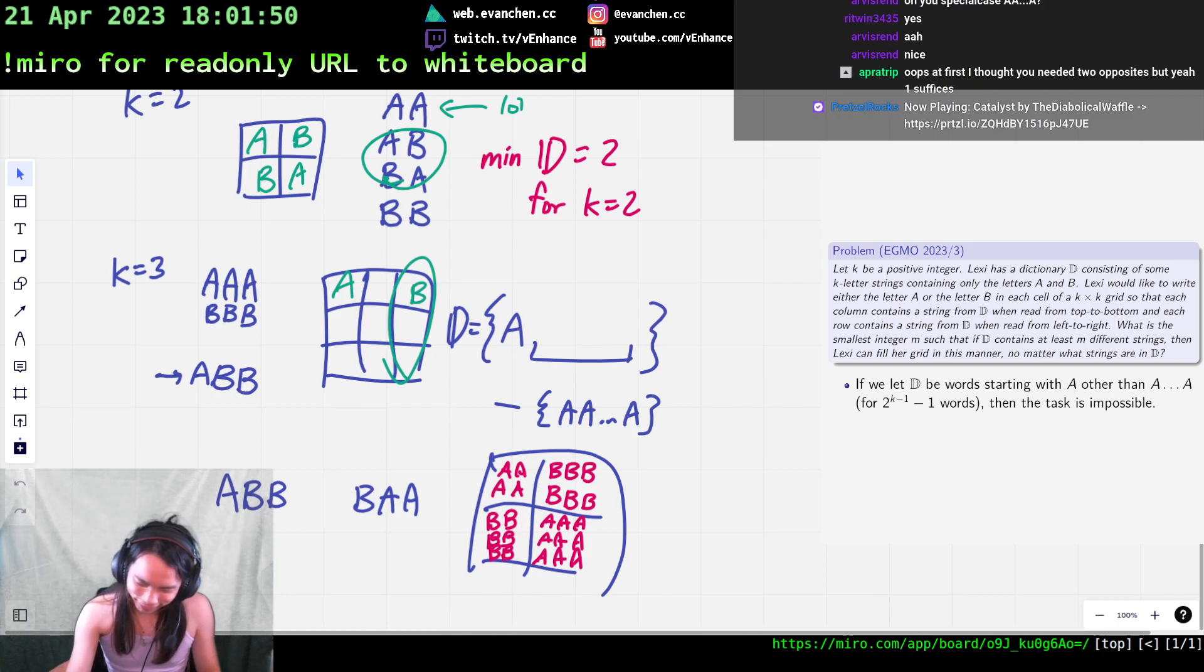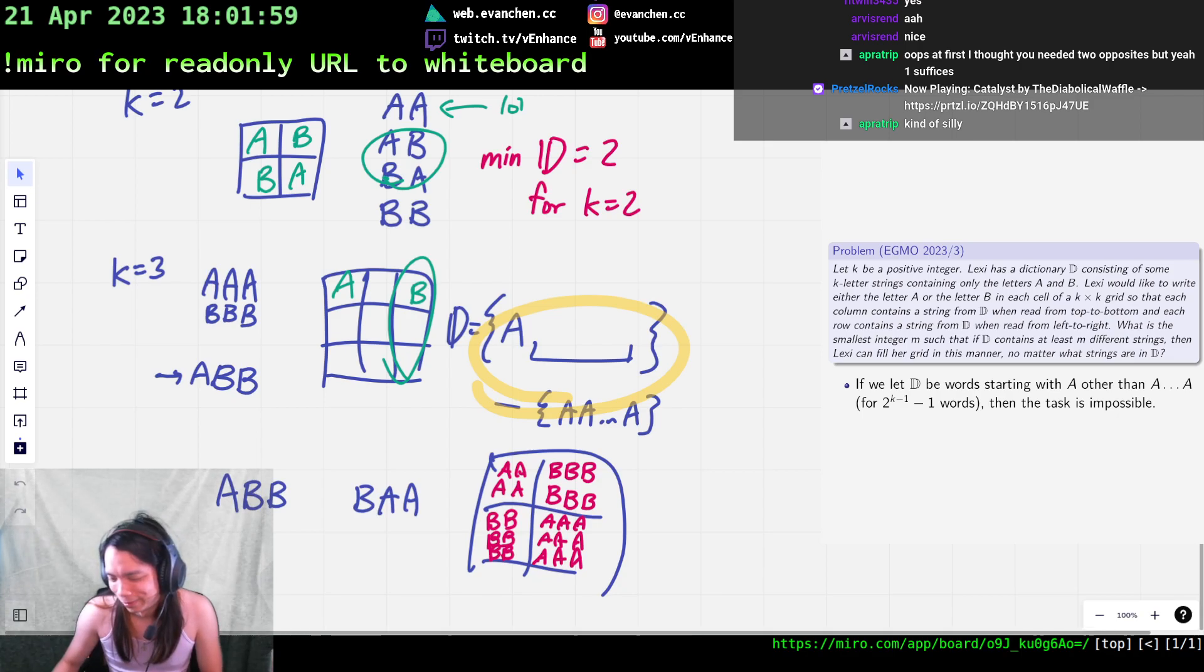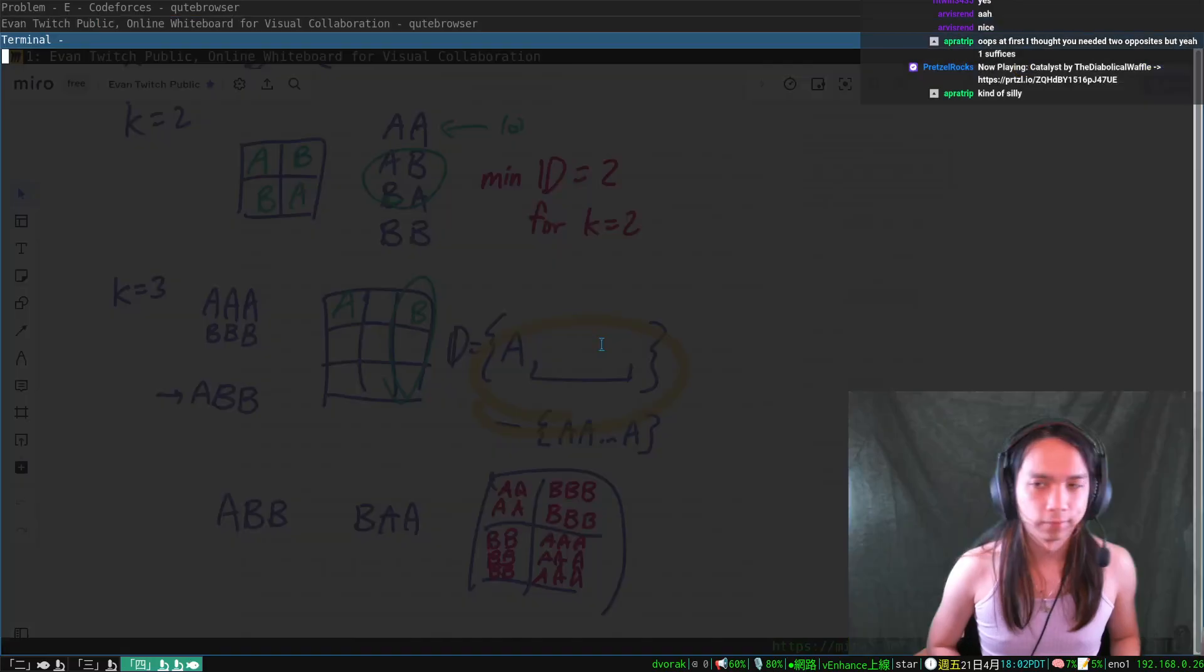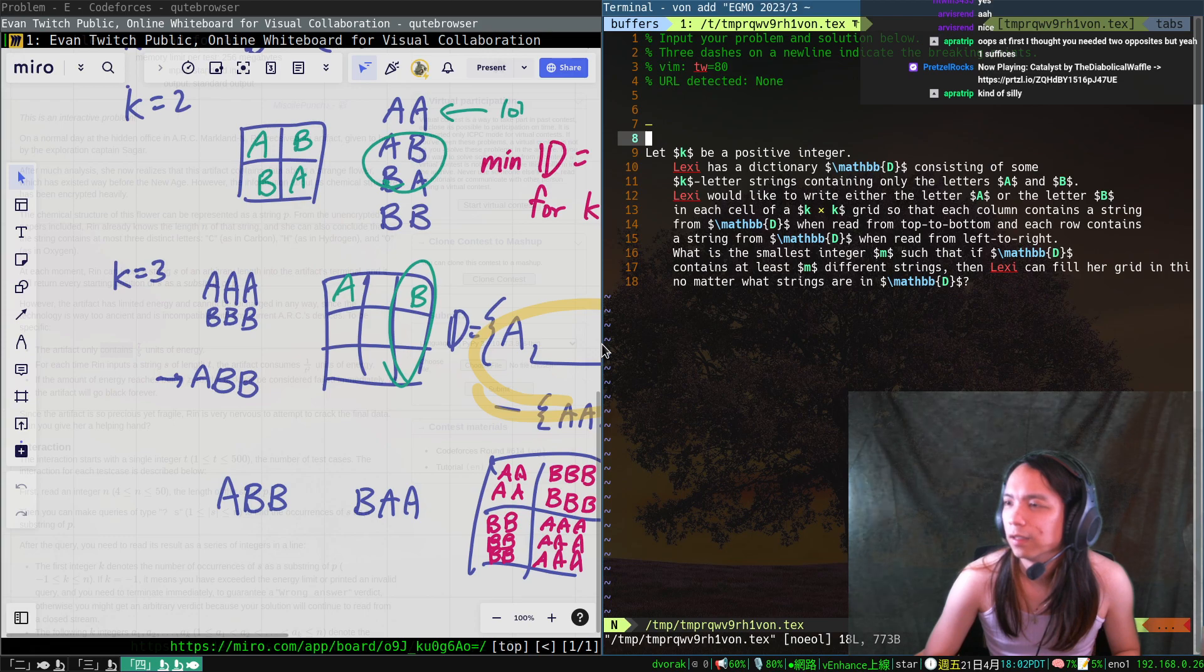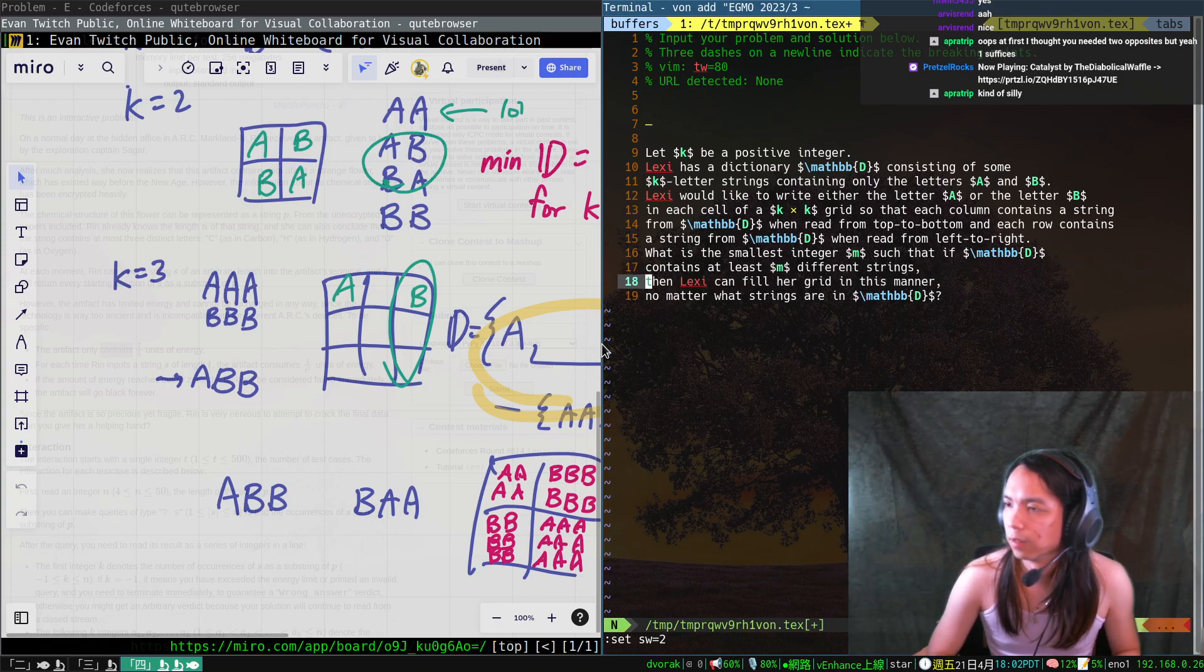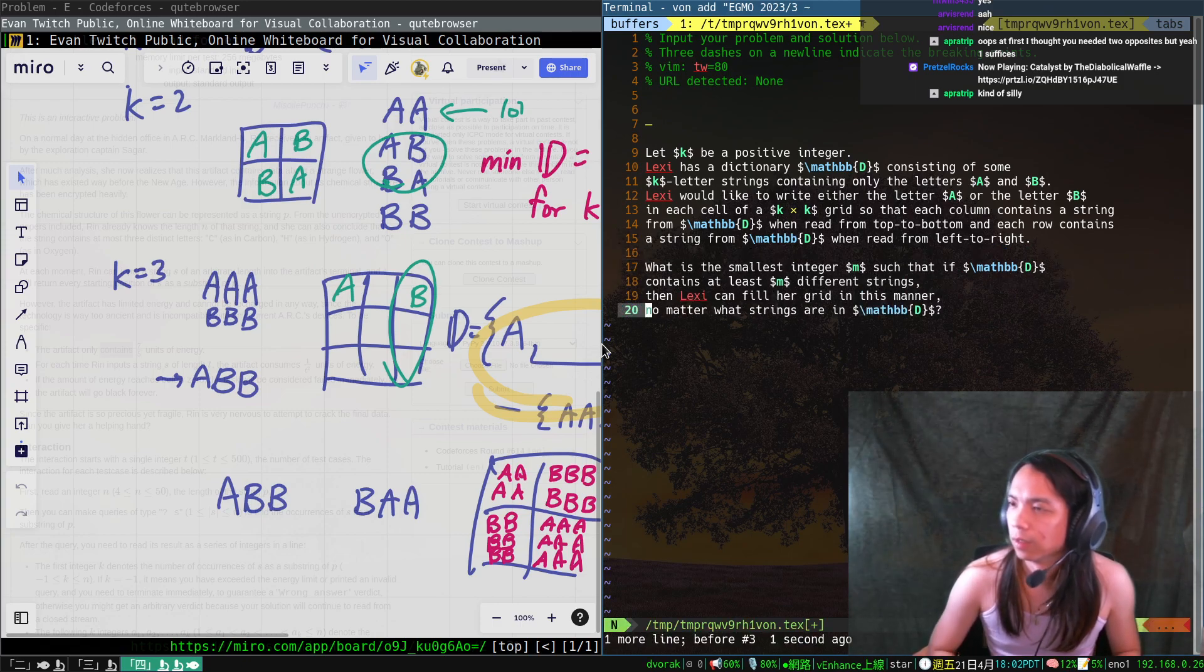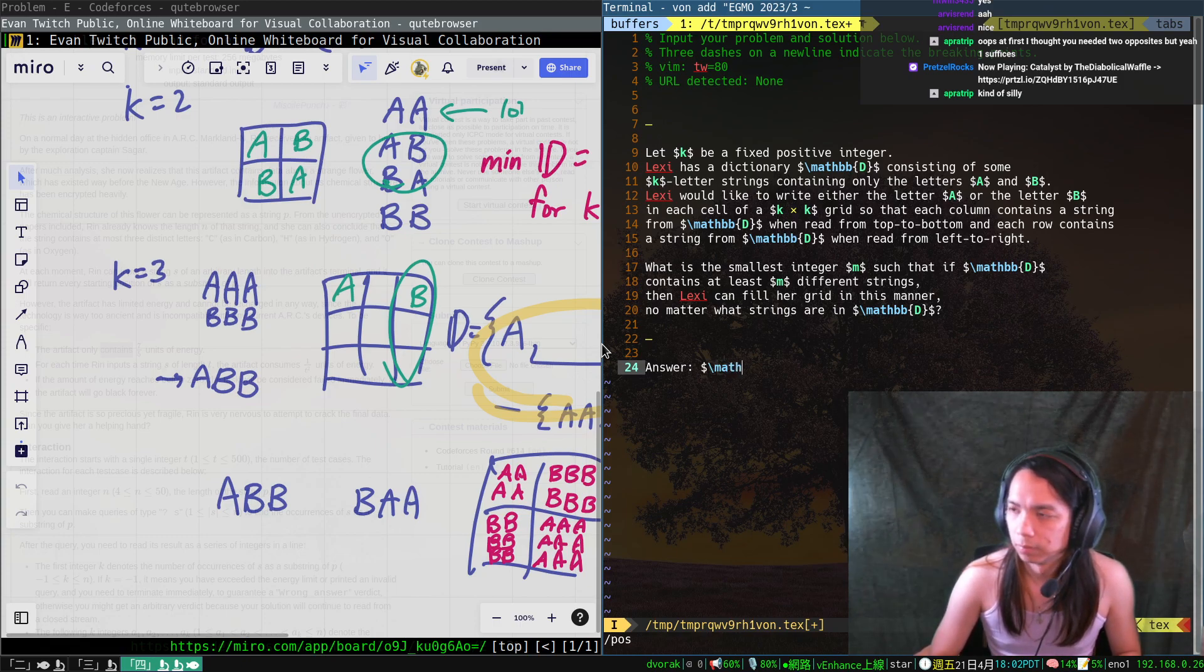And I mean, okay, like, in hindsight that makes sense because our construction is literally, like, for every opposite, I took the one that started with A because it was easier to think about. Okay, yeah, so, okay, fine. All right, fine.